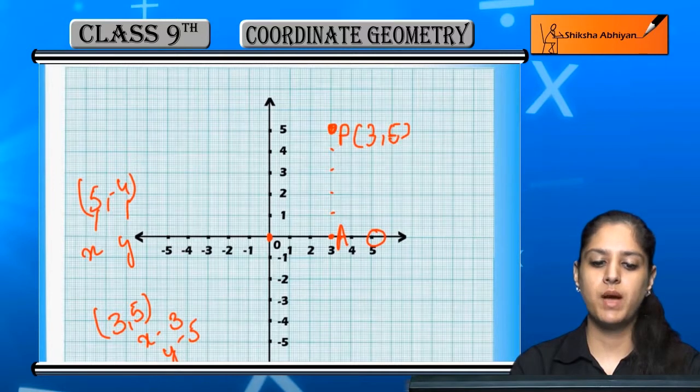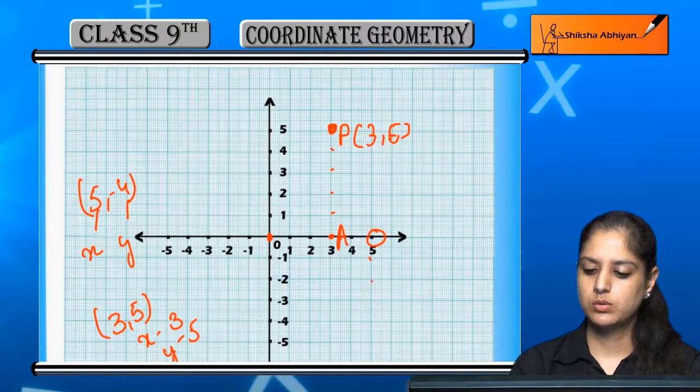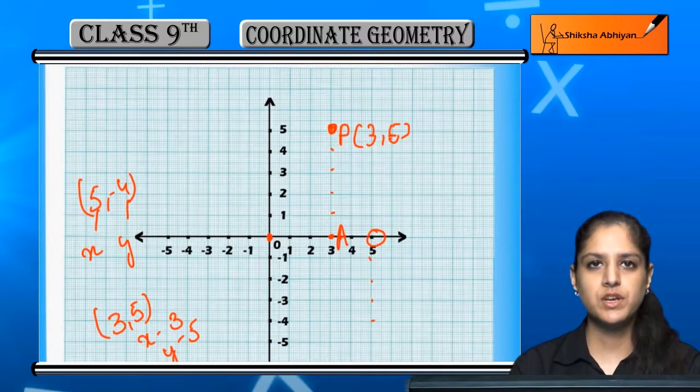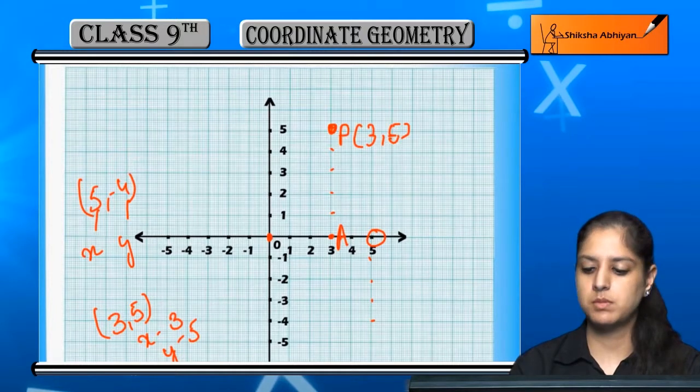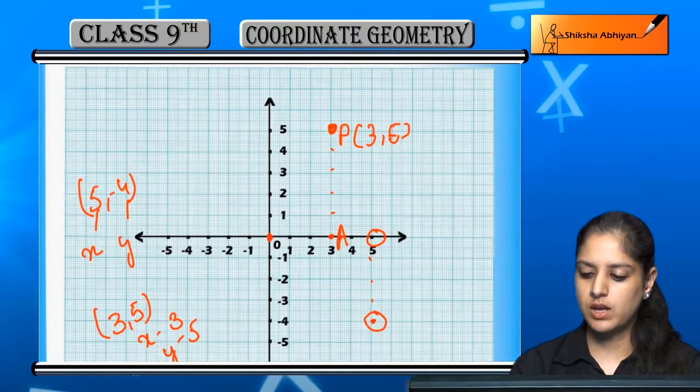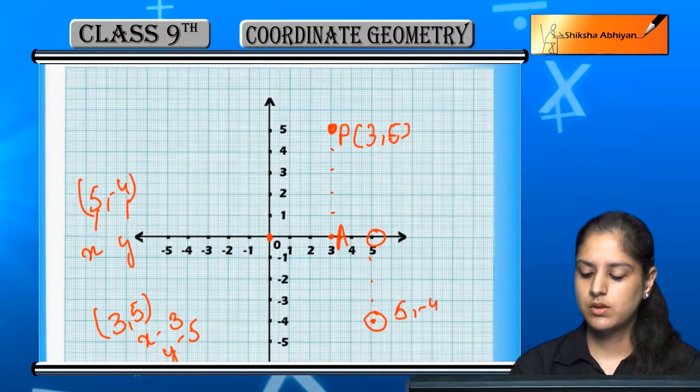Now we will start here. Minus 4, so 1, 2, 3, 4, we will go down because 4 is minus. So this point is 5, minus 4. This is Q.